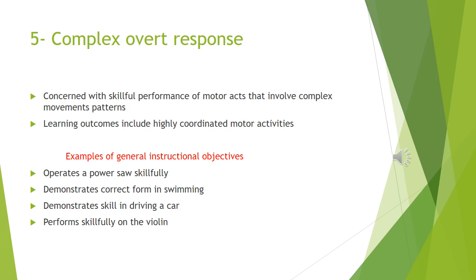Complex overt response involves the performance of motor acts that involve complex movement patterns, and the learning outcomes at this level include highly coordinated motor activities. Examples of general instructional objectives include: operates a power saw skillfully, demonstrates correct form in swimming, demonstrates skill in driving a car, and performs skillfully on the violin.